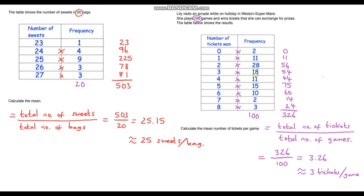Just before I finish, I really want to emphasize the importance of understanding the frequency table and the process of using it to calculate the mean. I don't want you to just use a formula without understanding where the numbers come from — that will really help when you look at other things related to frequency tables. In the next video we're going to carry on using frequency tables and look at calculating the median, the mode, and possibly the range. Thanks for watching and I'll see you in the next video.